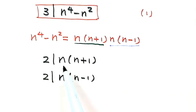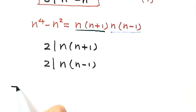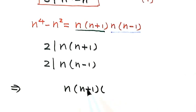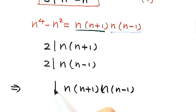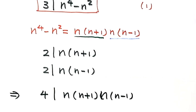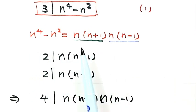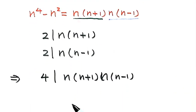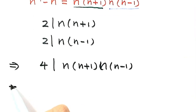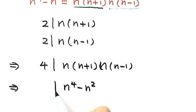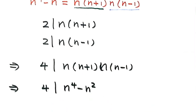So the full product n times (n plus 1) times n times (n minus 1), which equals n to the fourth minus n squared, is divisible by 2 times 2, which is 4. So n to the fourth minus n squared is divisible by 4. That is our second result.